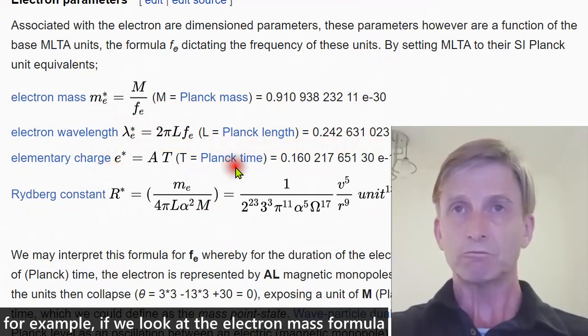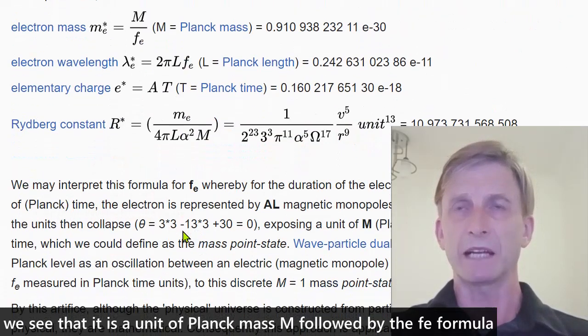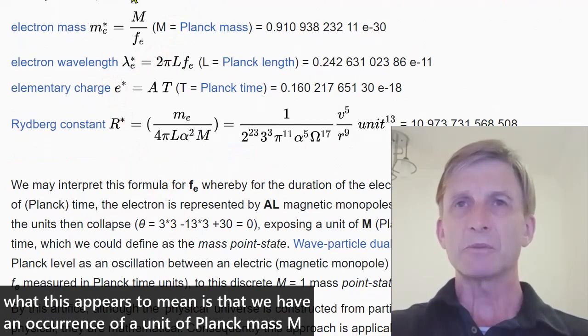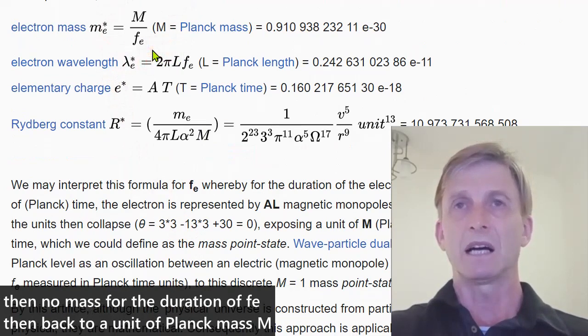For example, if we look at the electron mass formula, we see that it is a unit of Planck mass followed by the Fe formula. What this appears to mean is that we have an occurrence of the unit of Planck mass. Are there no mass for the duration of Fe? Then back to a unit of Planck mass.